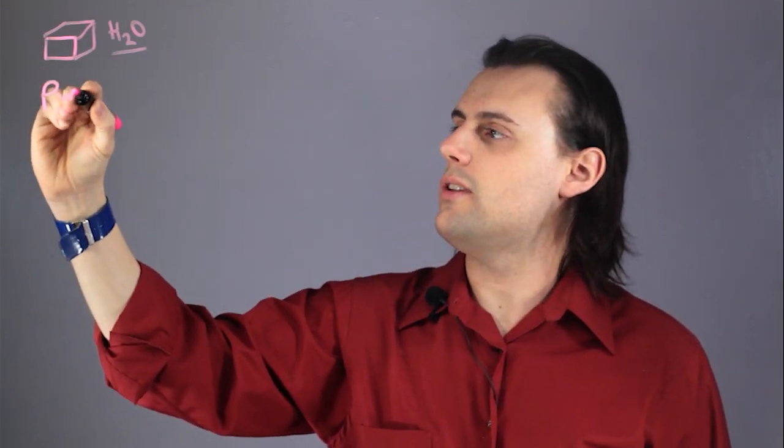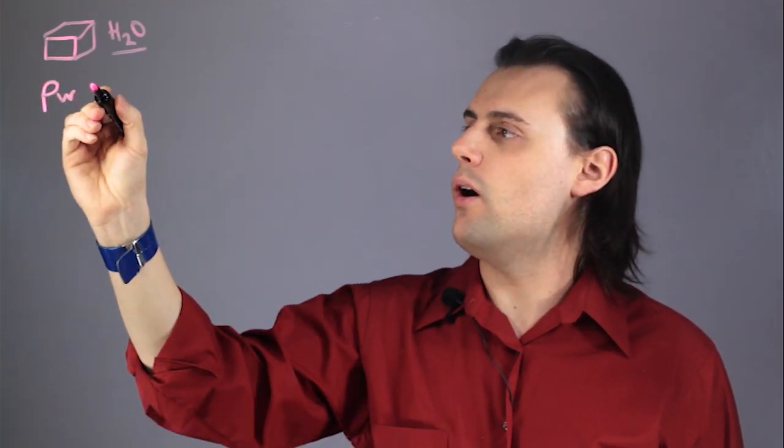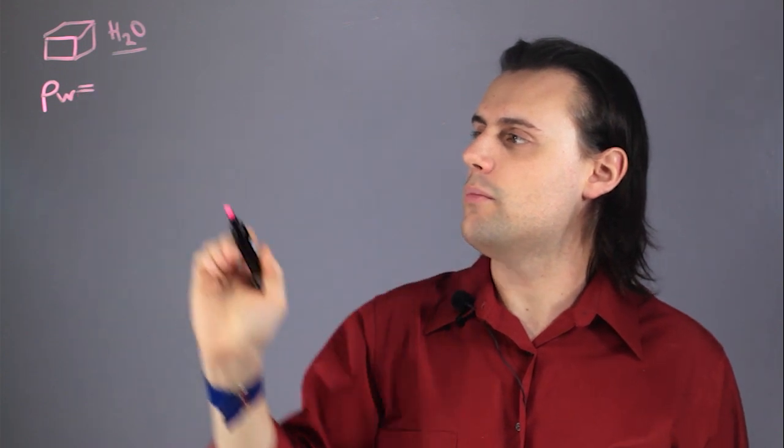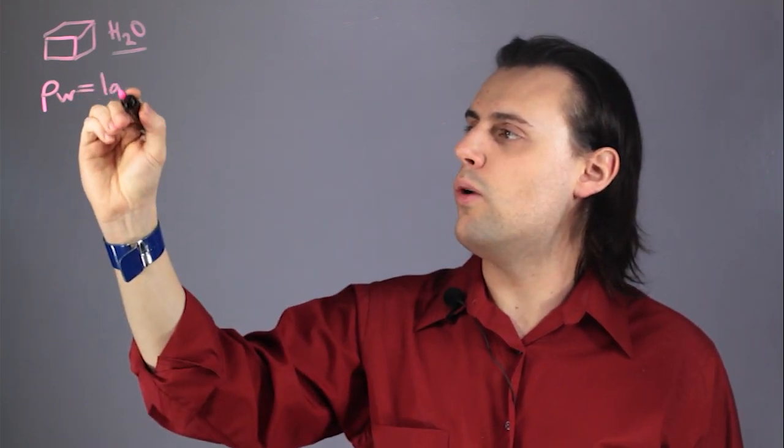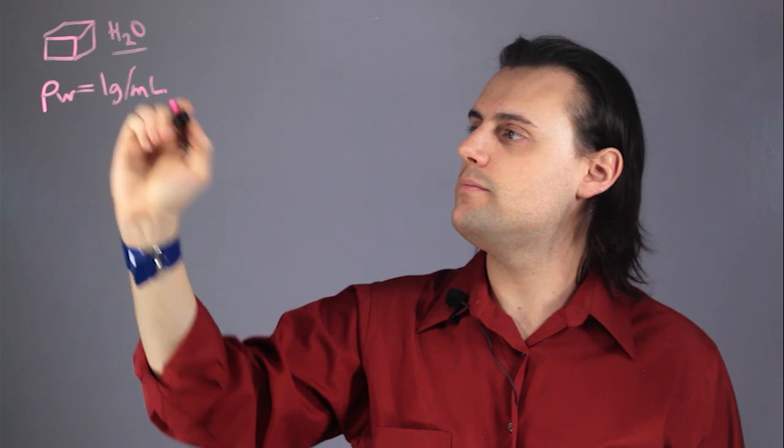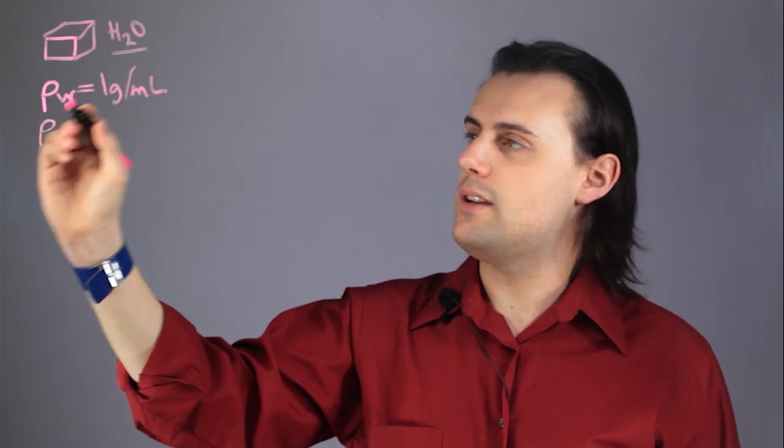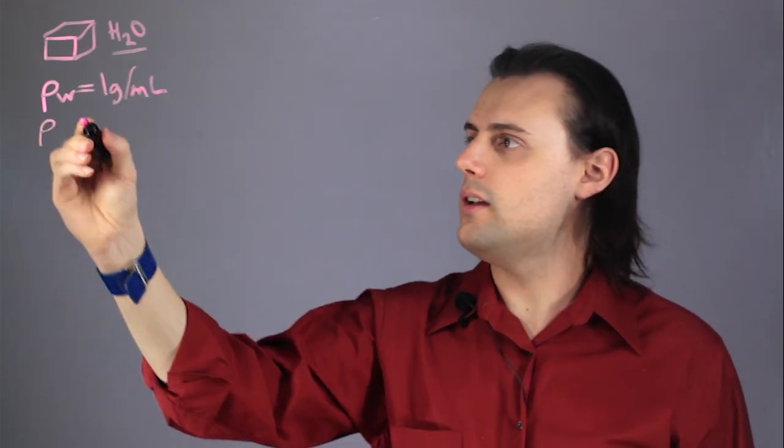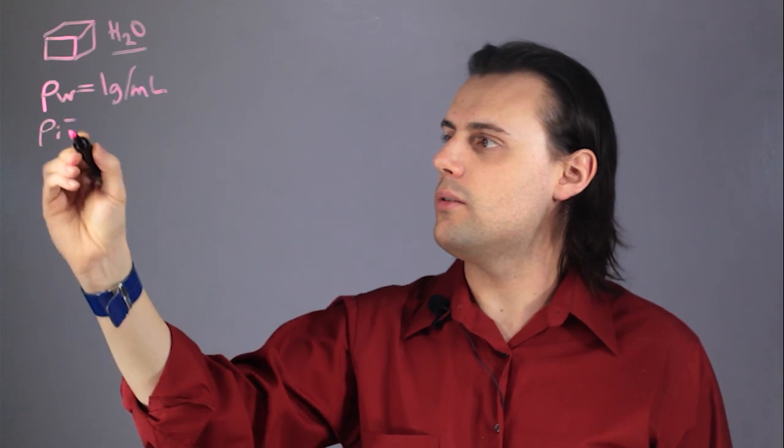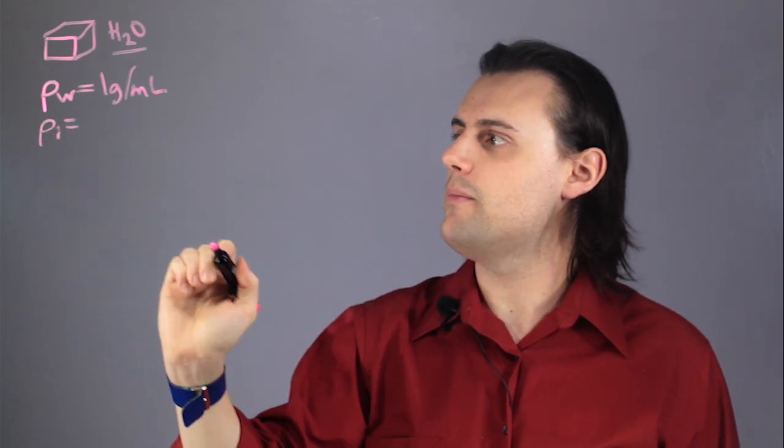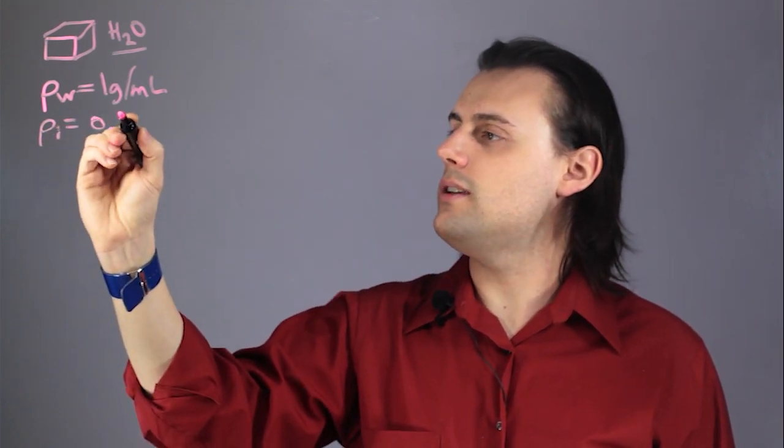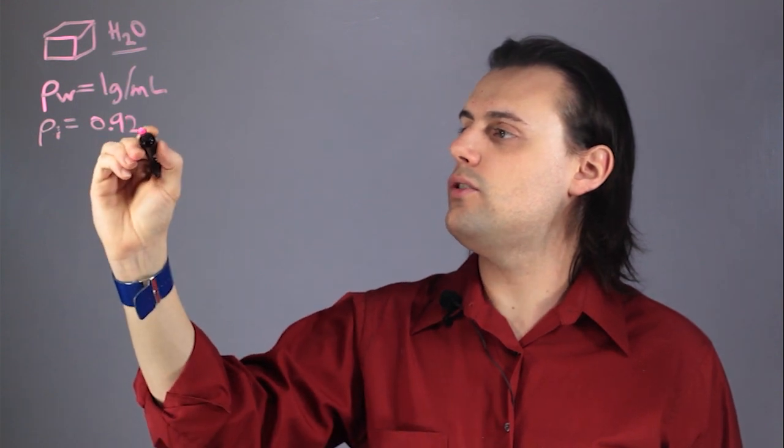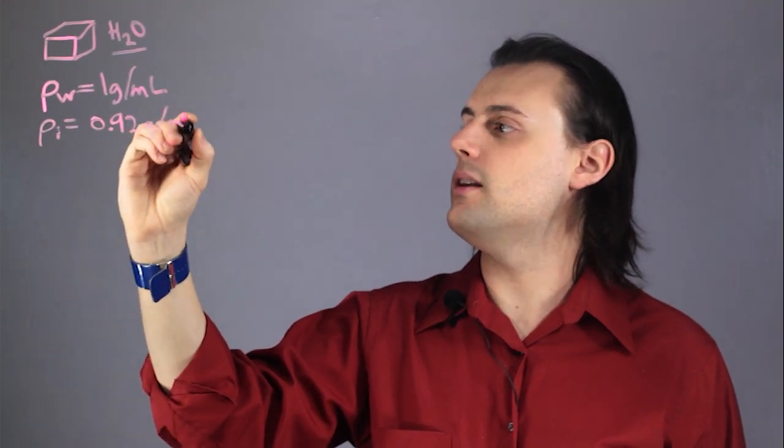So, whereas the density of the liquid water, which I'll denote as ρw, is equal to 1 gram per milliliter, the density of the ice water is actually a little less. So, I'm going to denote that as ρi, and it's equal to 0.92 grams per milliliter.